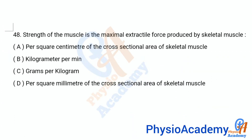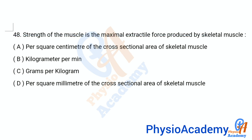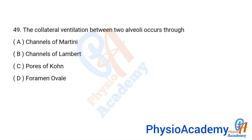Question number 48: Strength of the muscle is the maximal contractile force produced by skeletal muscle per square centimeter of the cross-sectional area of skeletal muscle. The correct answer is option E: per square centimeter of the cross-sectional area of skeletal muscle.